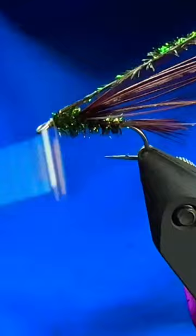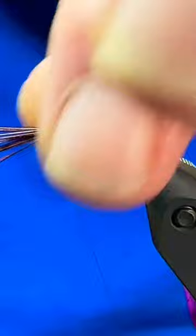From there we'll tear that out of there, pull our wing case over and just tie that off. When we trim that out we'll hang on to those tips and tie them in on the underside.